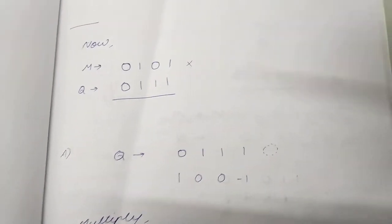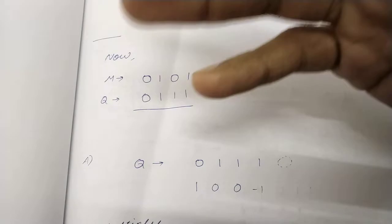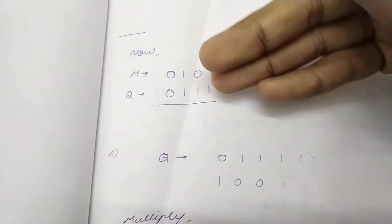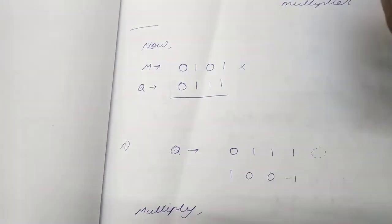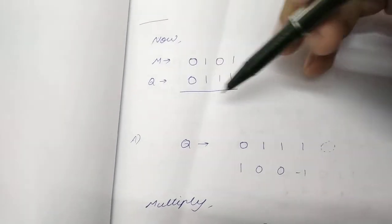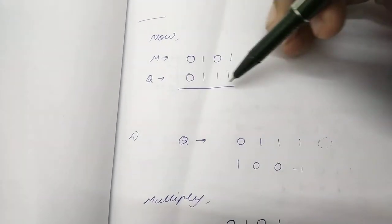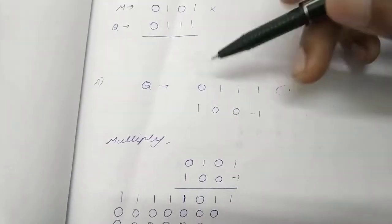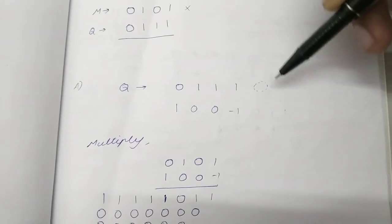Okay, in this video we will see an actual example of how the Booth algorithm works using two real numbers. This is the multiplier and this is the multiplicand. We take the multiplier and we encode it: 0, 1, 1, 0, and we append the 0.